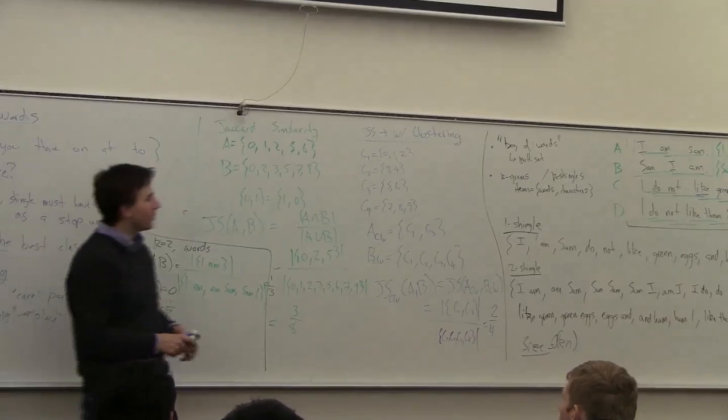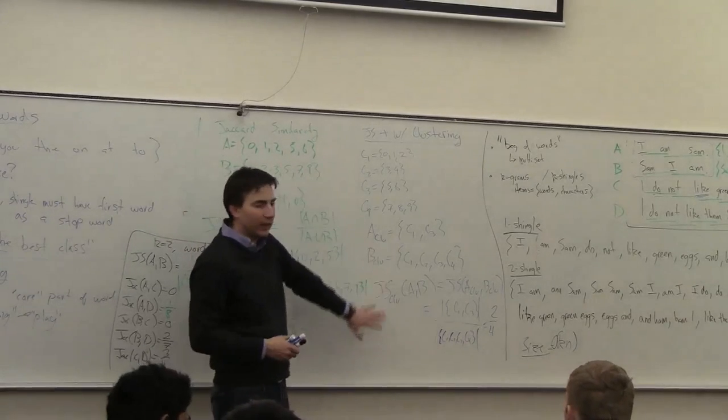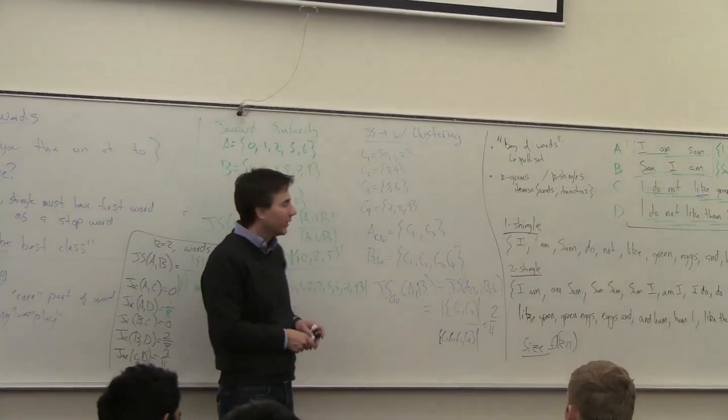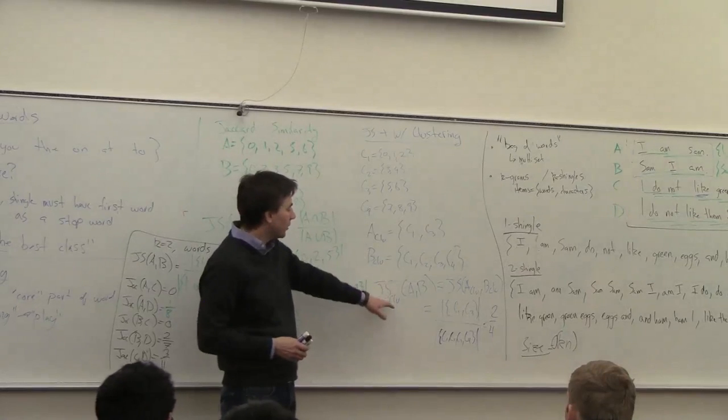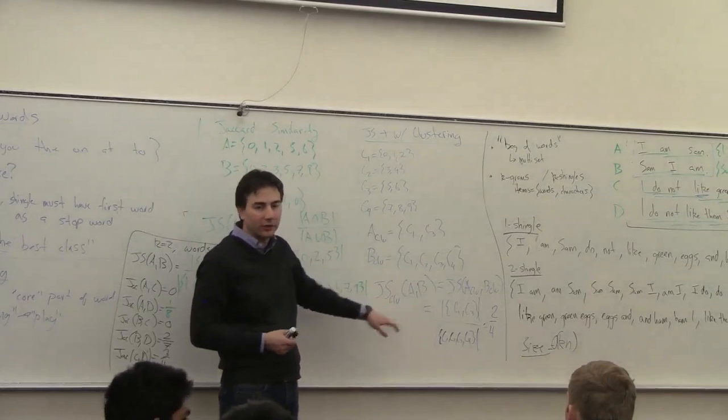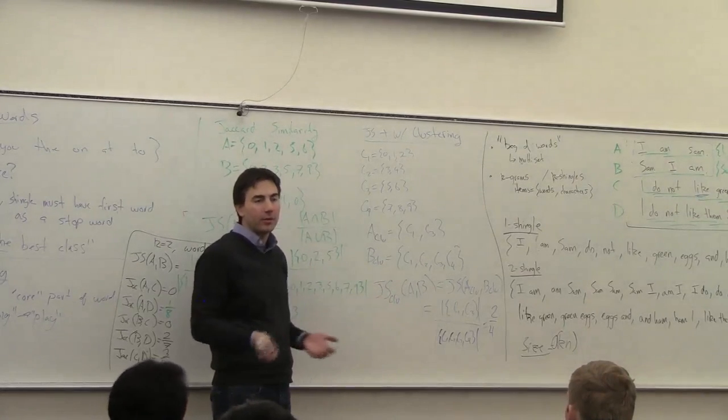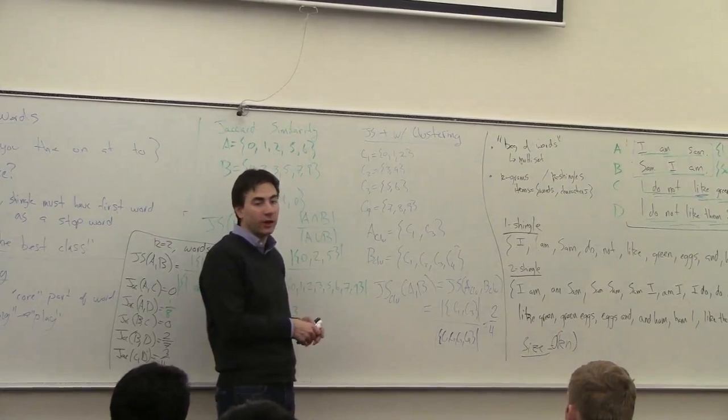So maybe this is a modeling choice, but you can also think of it as this distance. And because you can reduce it to the Jaccard distance on the clusters, it still has all the nice properties of the Jaccard distance.